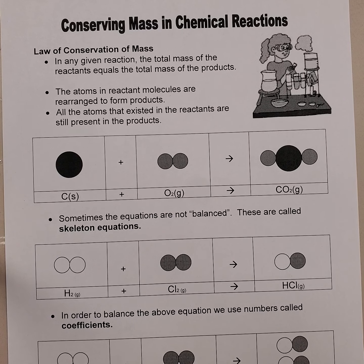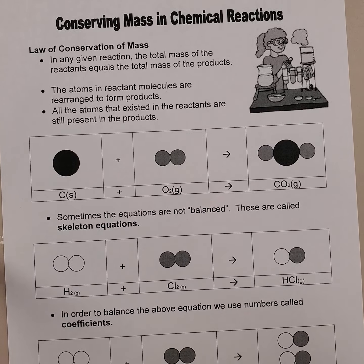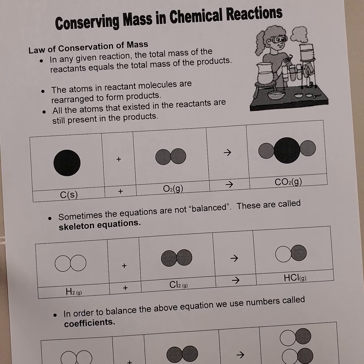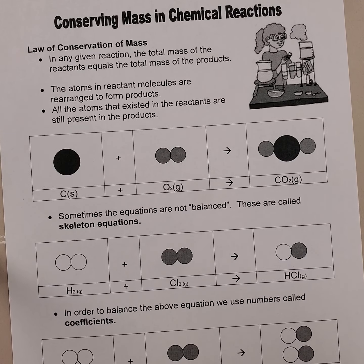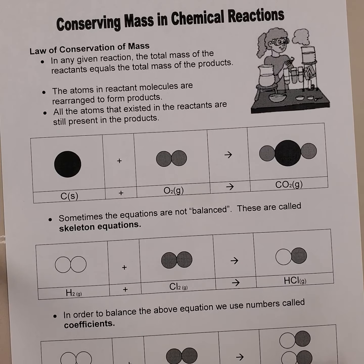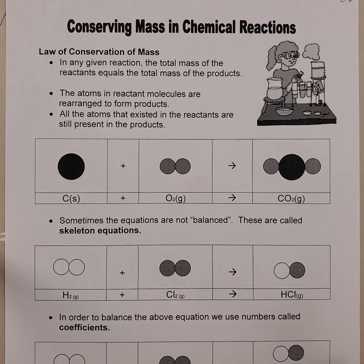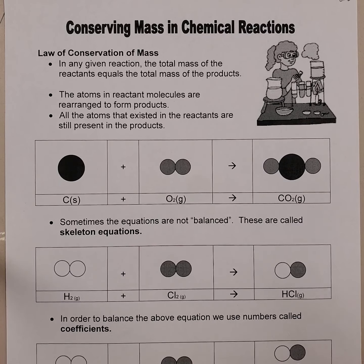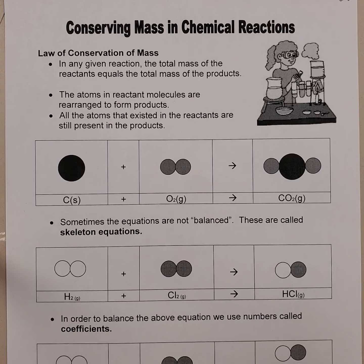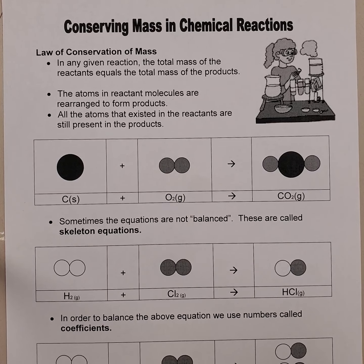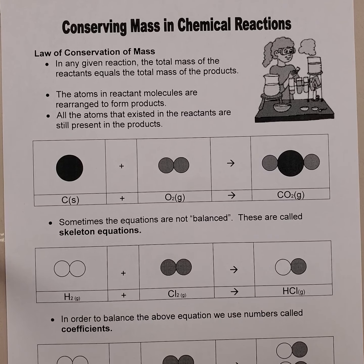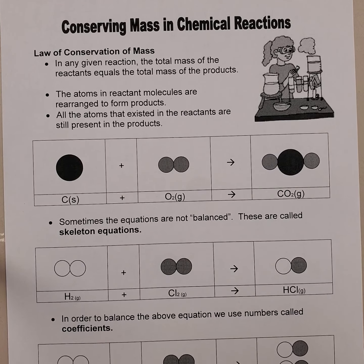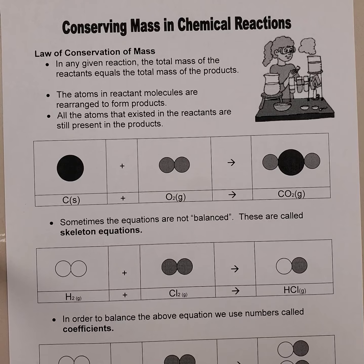In the previous lesson, we learned about creating word equations and chemical equations in order to show how reactions take place. Now what we're going to be looking at is ensuring that the number and quantity of atoms in our reactants equals the number and quantity of atoms in our products. This is called the Law of Conservation of Mass.